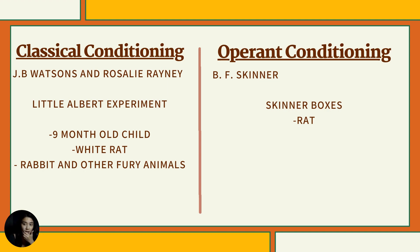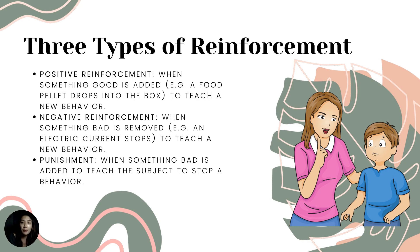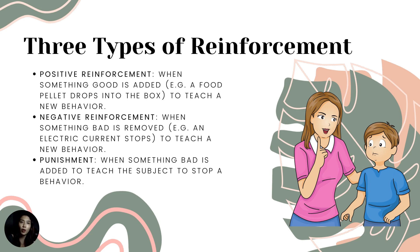These experiments demonstrate that in operant conditioning, an animal or human learns a behavior by associating it with consequences. As mentioned, there are three types of reinforcement in operant conditioning: positive reinforcement, negative reinforcement, and punishment. Behaviorists believe that if teachers provide positive reinforcement or rewards whenever students perform a desired behavior, students learn to perform that behavior.